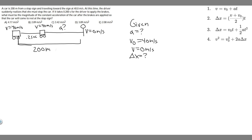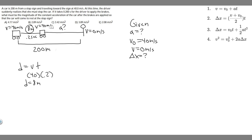Think about how this works. We know the total distance — this whole thing is 200 meters. And we know how long the driver is going to spend during the reaction interval and the speed they're going at, so we can find how much distance that covers. Distance equals velocity times time. They're traveling 40 meters per second for 0.2 seconds, so that's just 40 times 0.2, which equals 8 meters. So they travel 8 meters during reaction time. That means the braking distance must be 192 meters, because the total is 200 and this chunk is 8 meters.